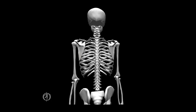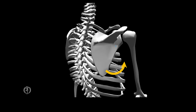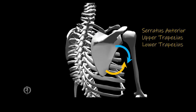Next, we can look at scapular elevation and scapular depression. Scapular elevation is caused by force vectors created by the upper trapezius, the levator scapula, and the rhomboids, while depression is created by a force vector created by the lower trapezius, the pectoralis minor, and the subclavius. Finally, we have scapular upward rotation and scapular downward rotation. Scapular upward rotation is caused by a torque created by the serratus anterior, the upper trapezius, and the lower trapezius, while downward rotation is caused by a torque created by the rhomboids and the pectoralis minor.